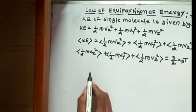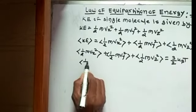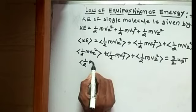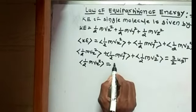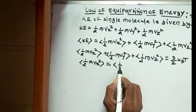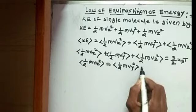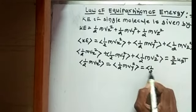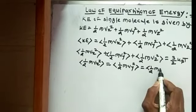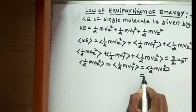So angle bracket half m vx square is equal to angle bracket half m vy square is equal to angle bracket half m vz square is equal to 1 by 2 kBT.